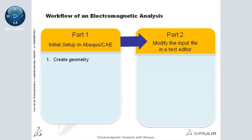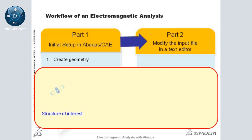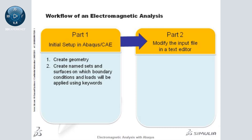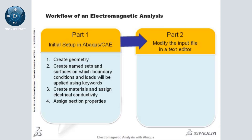The first step in the workflow is to create the geometry. The model must consist of the structure of interest and the surrounding medium. Since the tie constraint functionality is not currently supported for electromagnetic analyses, all the simulation geometry must be included in a single partitioned part, which you can generate in Abaqus CAE using manual partitions or the part merge functionality. Once the geometry is created, you can use Abaqus CAE to define any sets and surfaces required for the application of loads and boundary conditions, to create materials and assign electrical conductivity, to assign section properties, and to mesh the geometry using a continuum element type that has the same shape and connectivity as the electromagnetic elements.